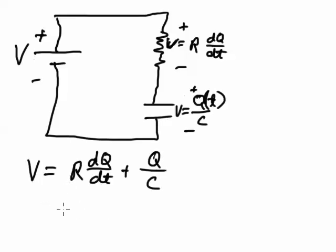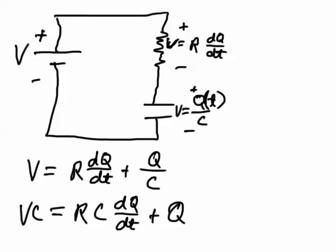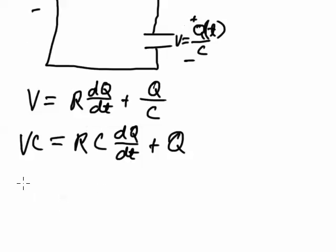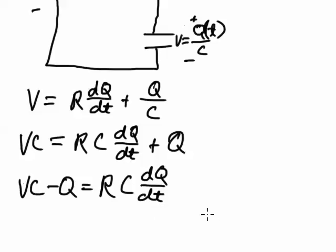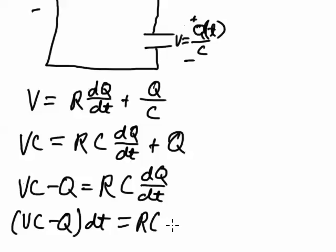Now what I'm going to try to do at this point is to separate the variables so that everything involving charge is on one side and everything involving time is on the other side. So the first thing I'm going to do is multiply everything by C, so I'll have VC equals RC dQ dt plus Q. Next thing I'm going to do is subtract Q from both sides, so I'll have VC minus Q equals RC dQ dt. And then what I'm going to do is multiply by dt, so I'll have VC minus Q dt equals RC dQ.